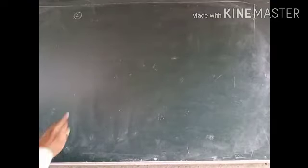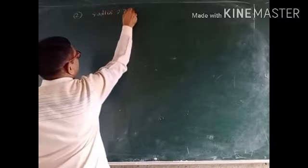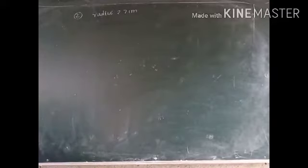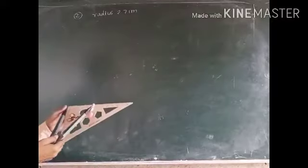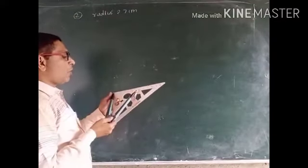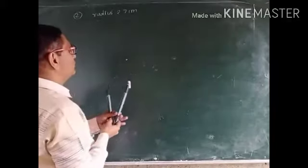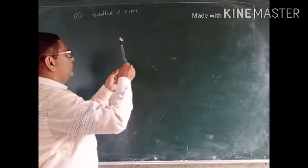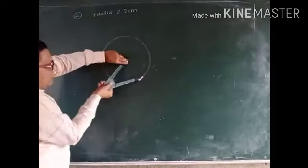The second example: we have to take a radius of 2.7 centimeters, take any point on the circle, and draw a tangent from that point. I am taking the distance 2.7 between the two tips of the compass, fixing the center of the circle, and drawing the circle.